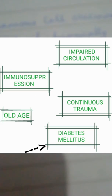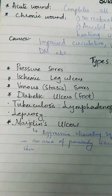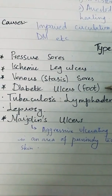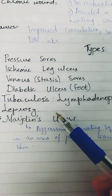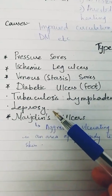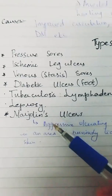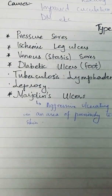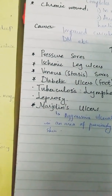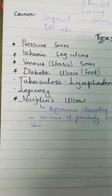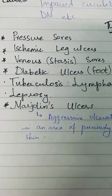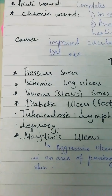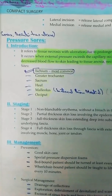Now let's move to the types of chronic wounds. These are pressure sores, ischemic leg ulcers or arterial ulcers, venous sores, diabetic ulcers, and there are also tuberculosis lymphadenopathy ulcers. We also find chronic wounds in leprosy. There is another type called Marjolin's ulcer — it is an aggressive ulcer which is a type of squamous cell carcinoma, presenting in an area of previously traumatized, chronically inflamed, or scarred skin. So Marjolin's ulcer is a malignancy. We'll go in detail of the first four types, starting with pressure sores.